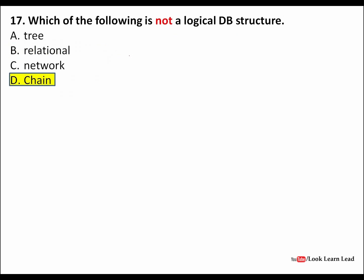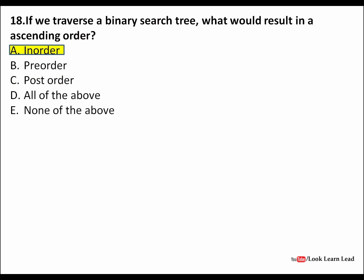Which of the following is not a logical database structure? Logical database structures include hierarchical, relational, network, and object-oriented. 'Chain' is not among them, so the answer is chain. A tree can be considered hierarchical.